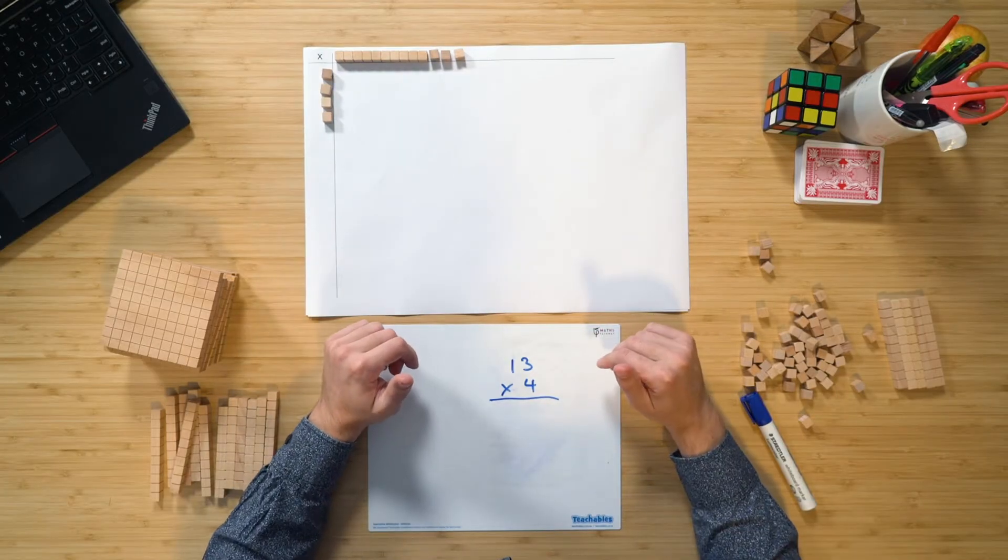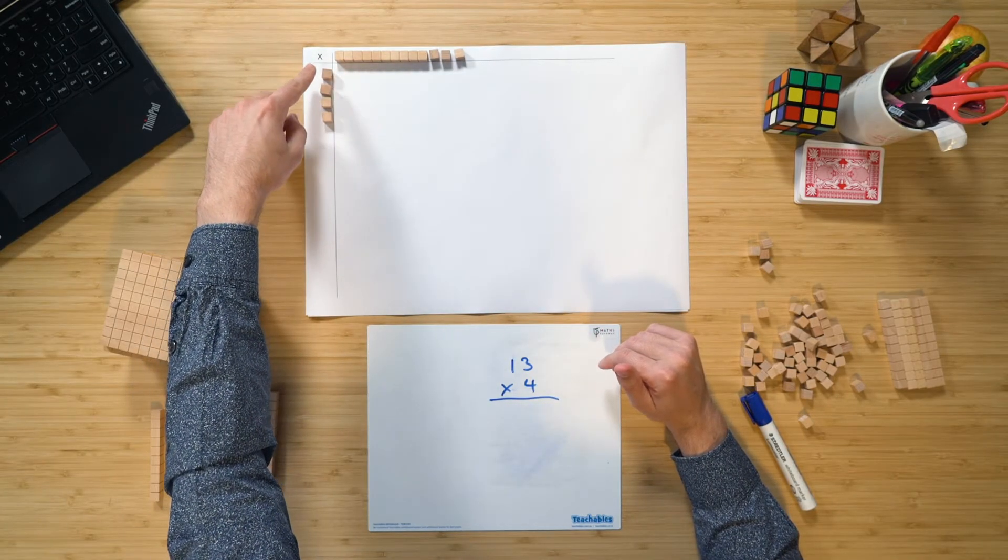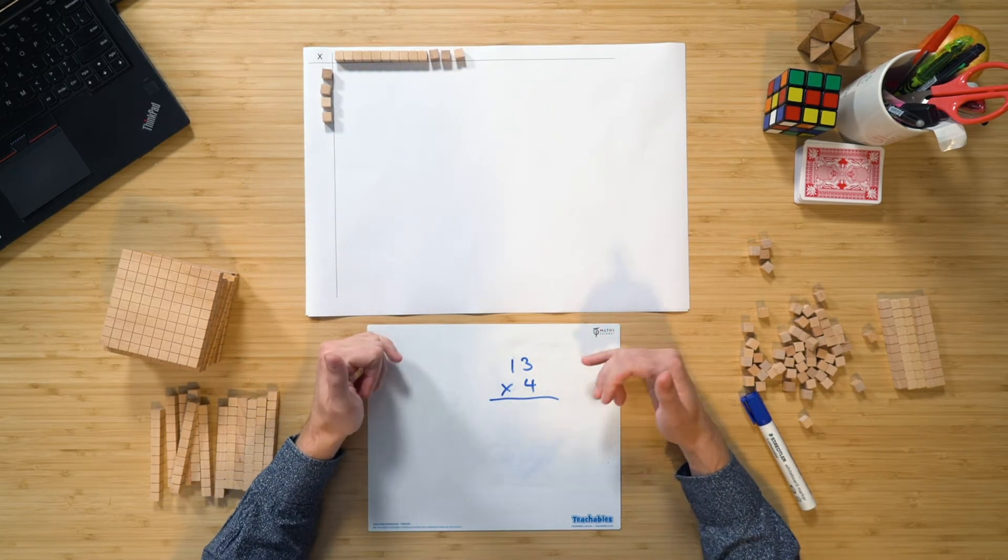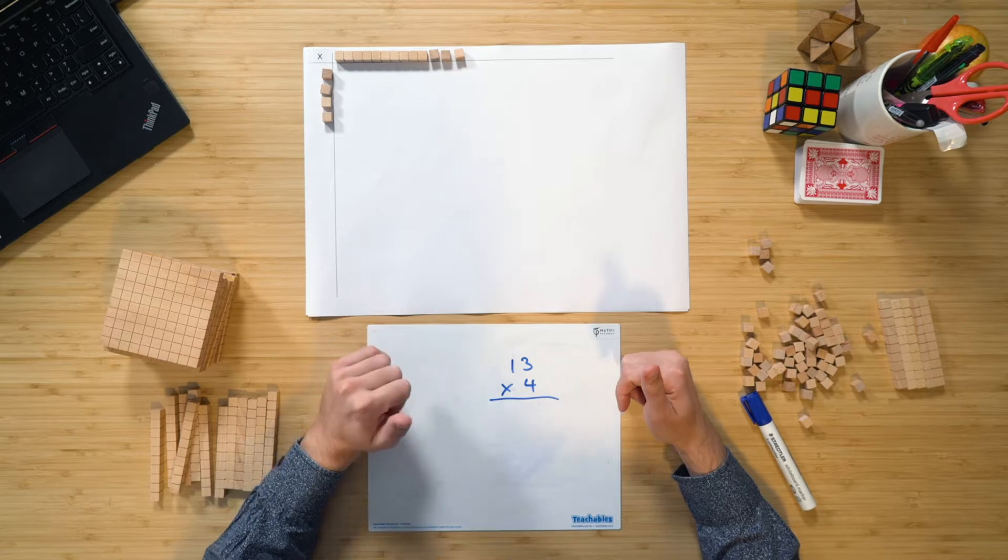Let's have a look at 4 times 13. So, as you can see here, I have my 4 and my 13, that is 10 and three 1s. And of course, I've represented it using the beginning of the algorithm that you can see here.